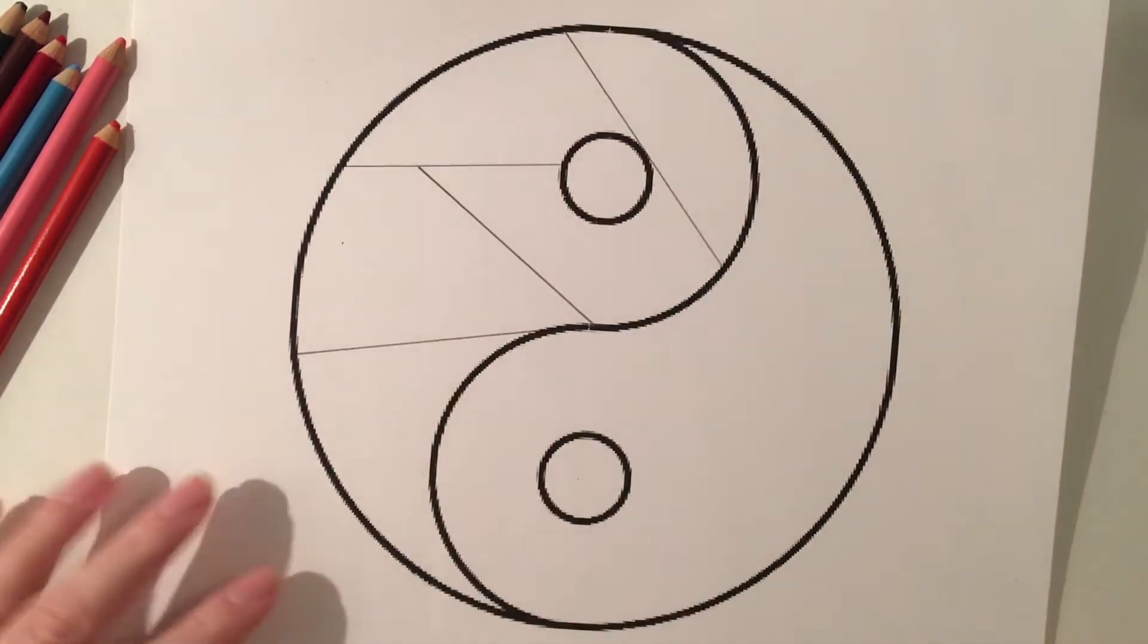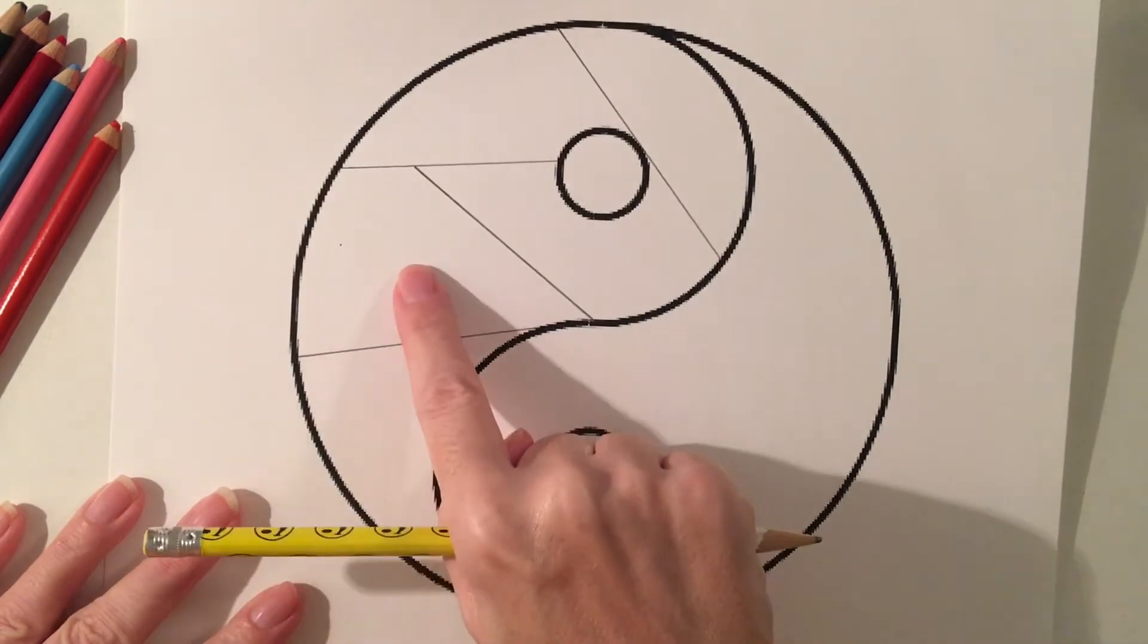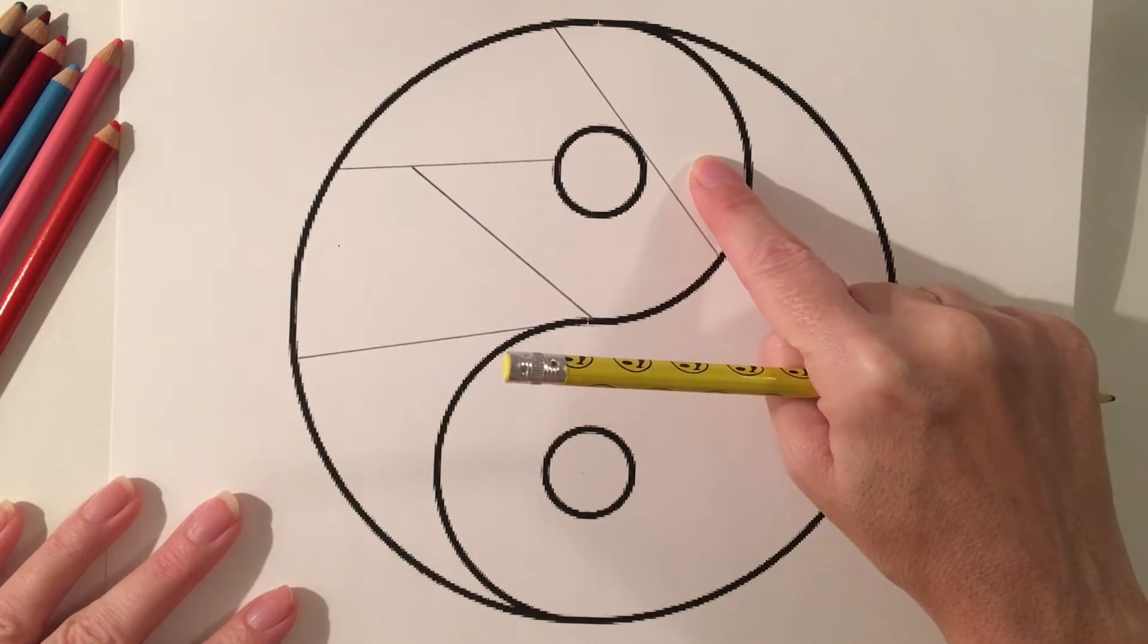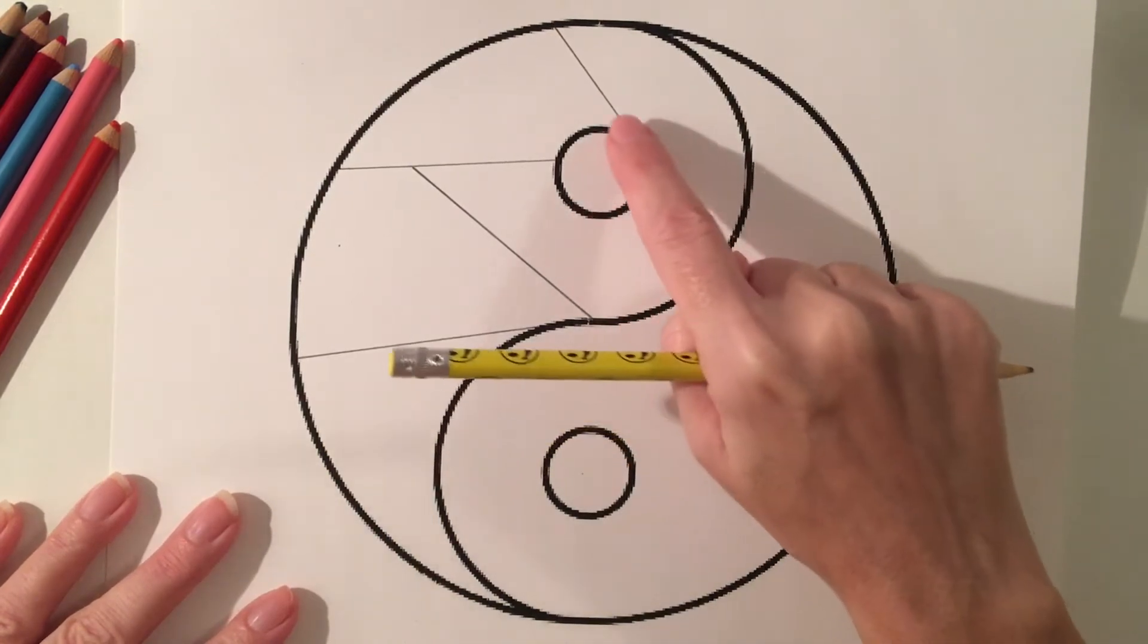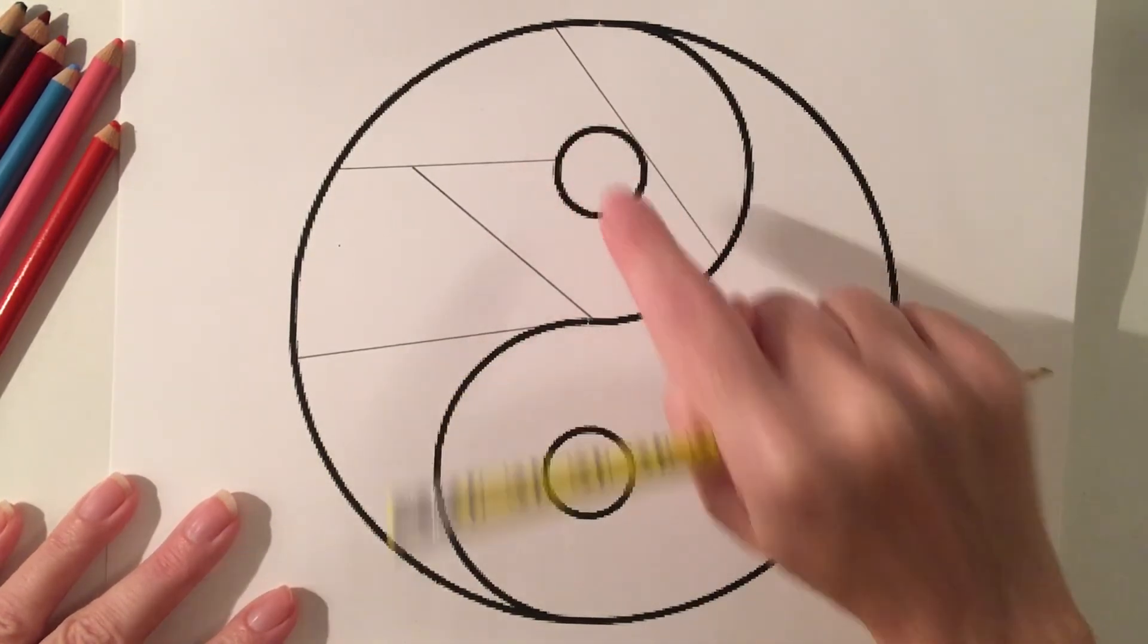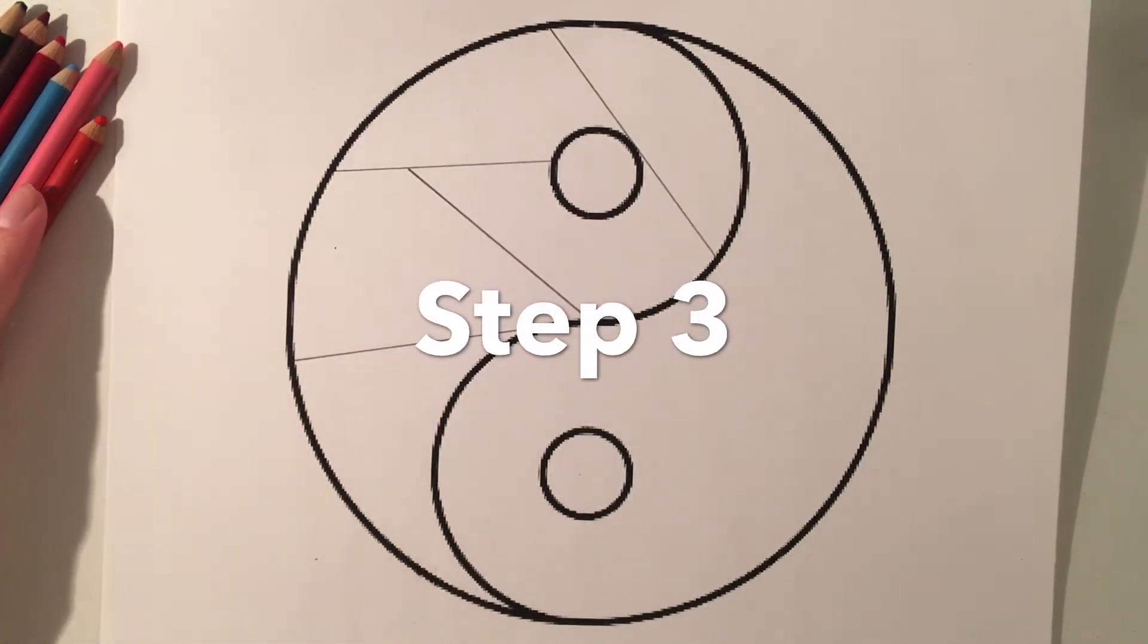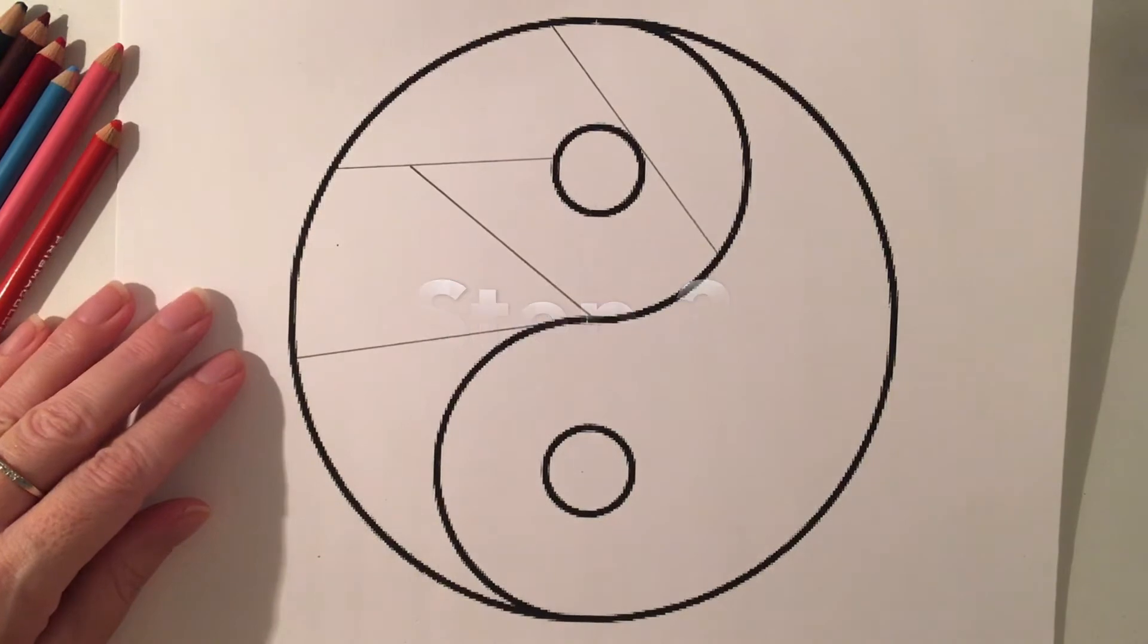So now when I count I am left with one, two, three, four, five different sections. I also am going to leave this circle empty. Now that I've created my sections I'm going to go ahead and start to fill in the different zentangles.